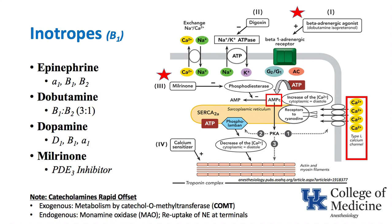These catecholamines have to be administered intravenously as a continuous infusion because exogenous catecholamines are rapidly metabolized mainly by catechol-O-methyltransferase, or COMT. Endogenous catecholamines like epinephrine and norepinephrine, when released from a nerve terminal, are rapidly taken back up and broken down by monoamine oxidase.